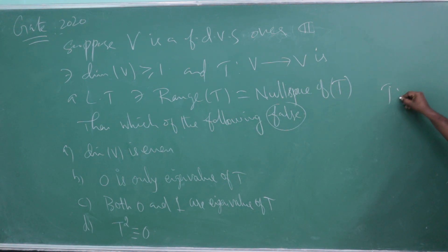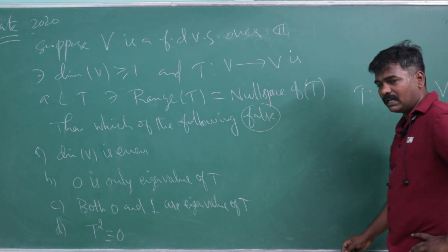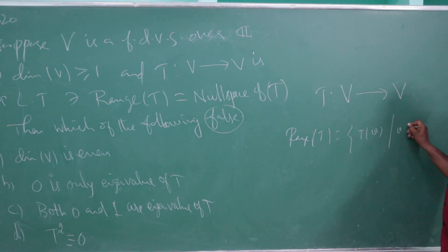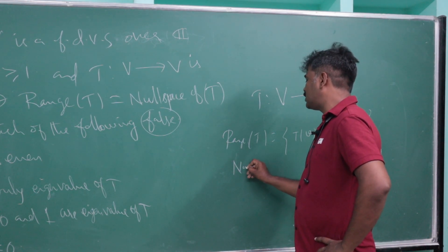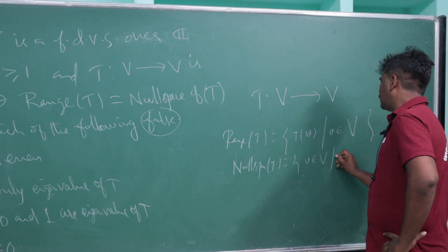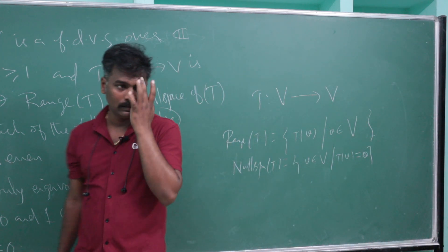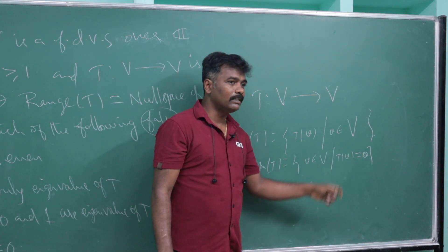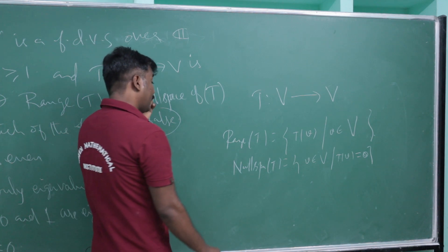T goes from V to V. The range of T is the set of all T(v) such that v is in V. The null space of T — also called the kernel — is the set of all v in V such that T(v) = 0.